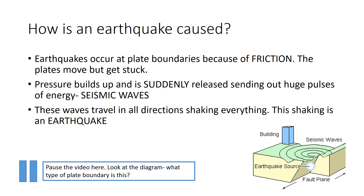The seismic waves get weaker as they travel. Even so, a large earthquake can be detected thousands of kilometres away. Pause your video here and have a look at the diagram. Can you work out what type of plate boundary this is from Lesson 1?